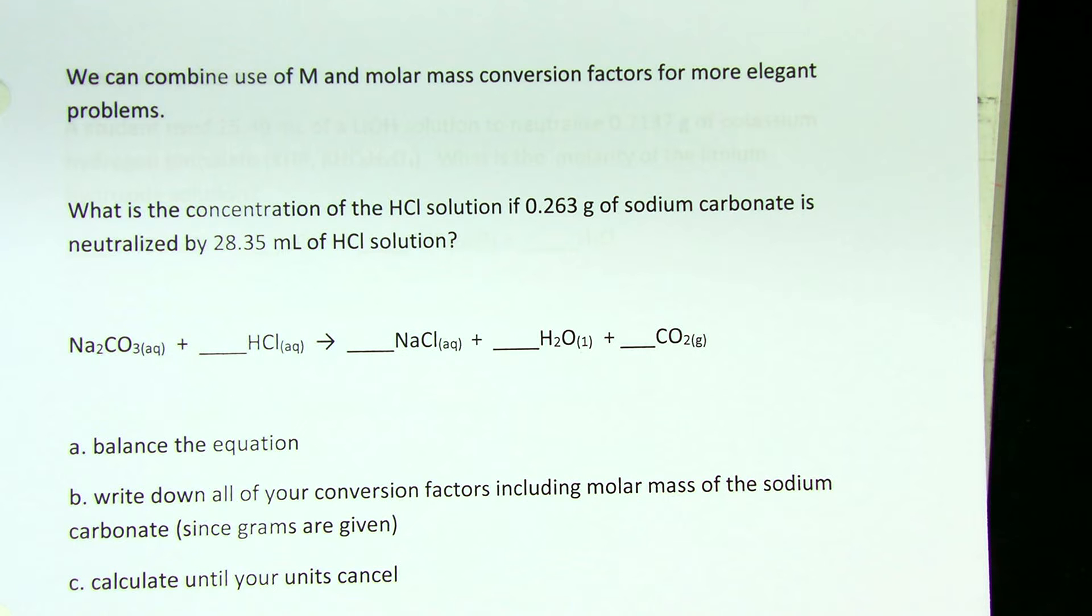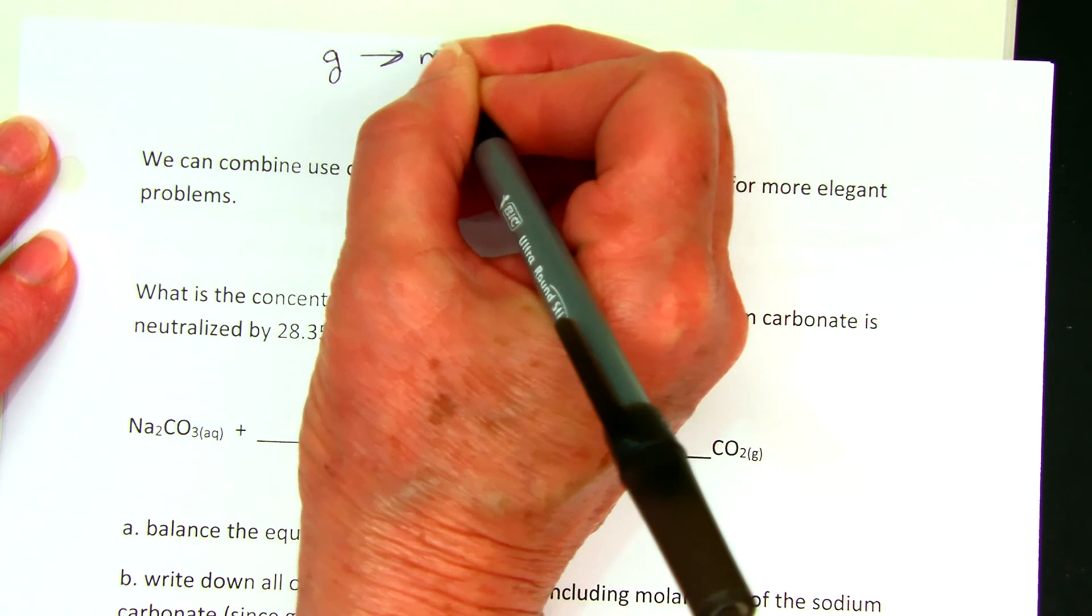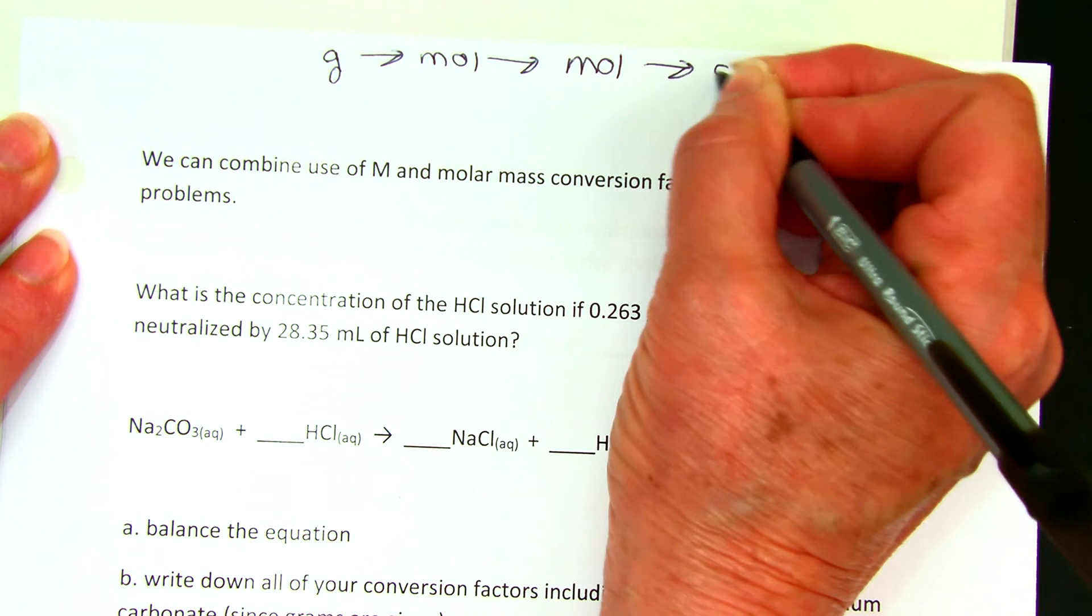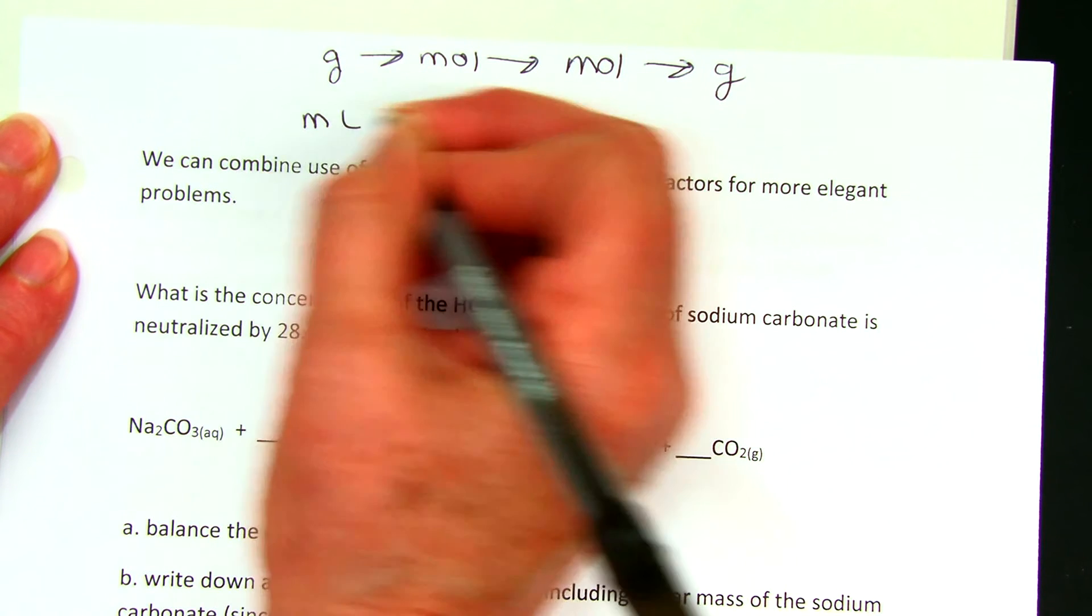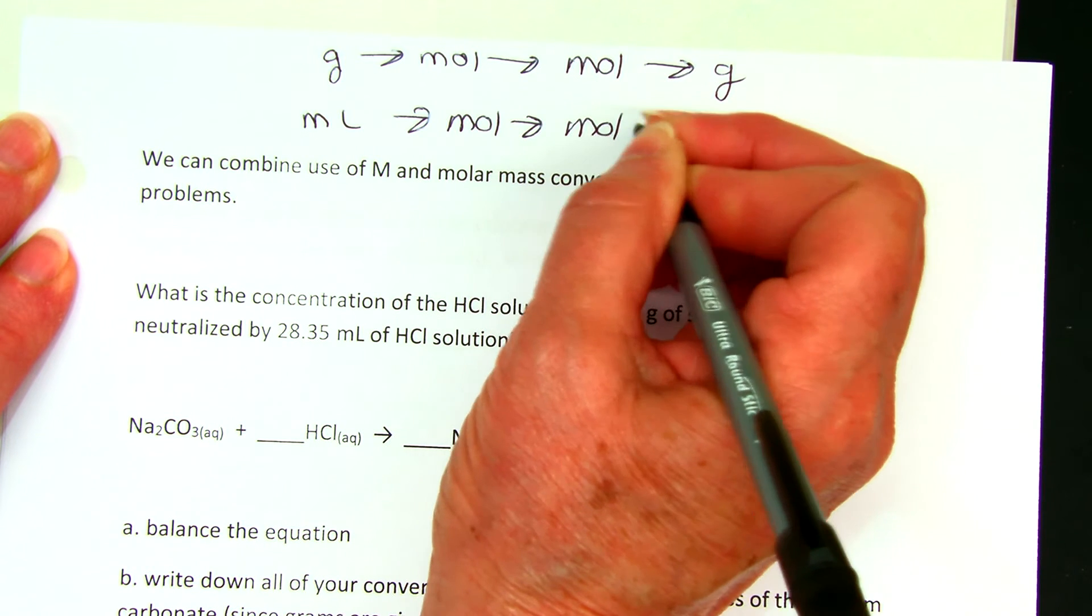Now we just did one with milliliters to moles, moles to moles, moles to milliliters. Now we can combine these, so we can think of two different trains: we have grams to moles to moles to grams, and we have milliliters to moles to moles to milliliters.